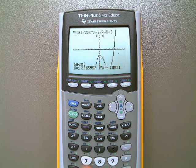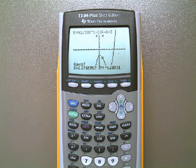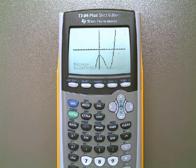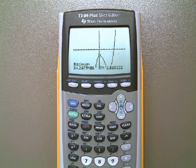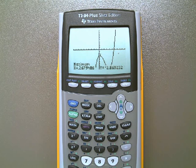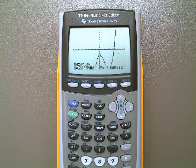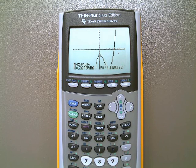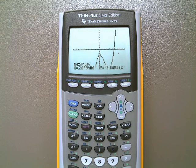The third thing it says is guess. And you just say yes. You want it to guess what the value is. And it's going to tell you that x is equal to 0.268 with a y value of negative 2.87. So I've just found the relative maximum.